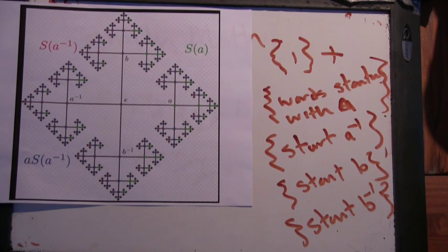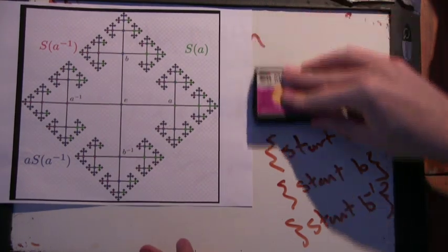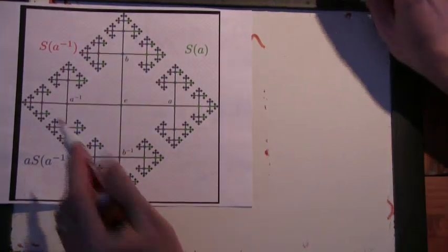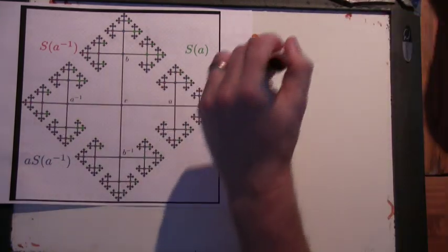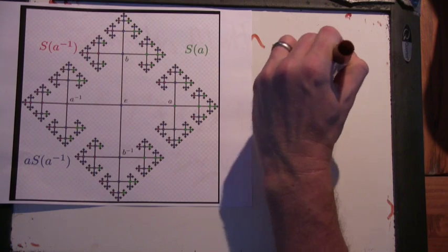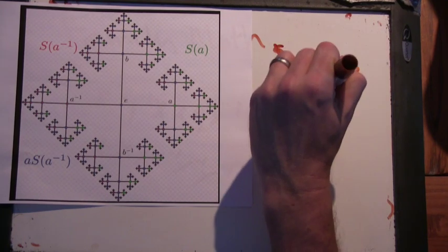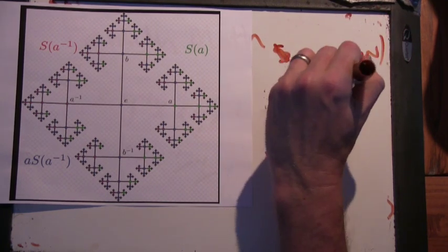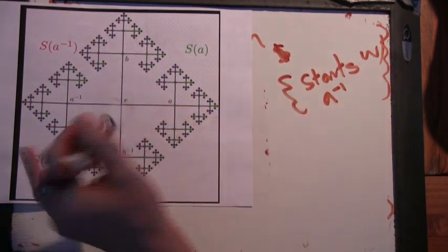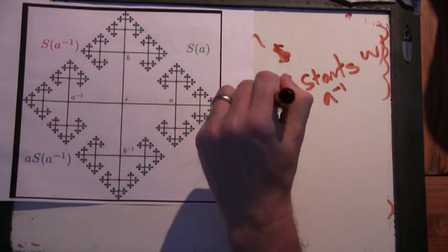All right. But I'm going to show you now a very interesting surprise. Okay. What if I go to this part here? So I'm going to go to the starts with A inverse. Starts with A inverse. I'm going to go to that part of the graph, and I'm going to multiply everything in this part of the graph by A.